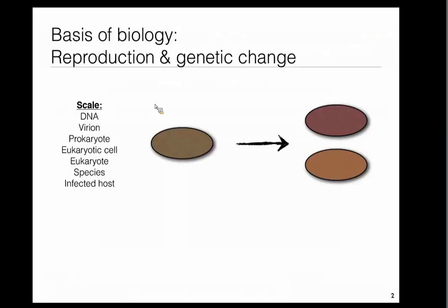In biology, one basis is that we have reproduction and genetic change, and this reproduction happens on very different scales. We can have DNA replicating, virions, then prokaryotes — bacteria replicating from new bacteria — eukaryotic cells, say cells in your body, whole eukaryotes reproducing, but then also whole species reproducing, meaning we have speciation events. We also have infected hosts, where one host infects another host, which can be seen as a reproduction event.